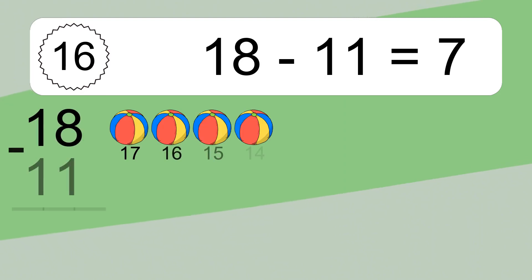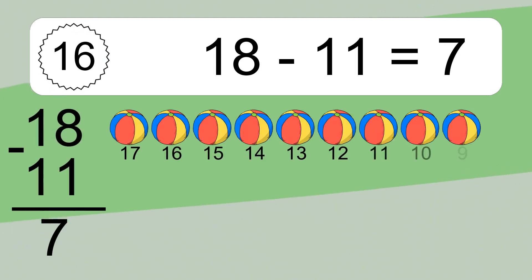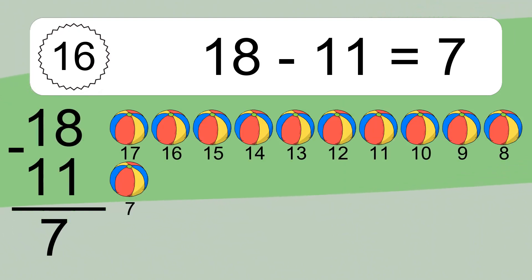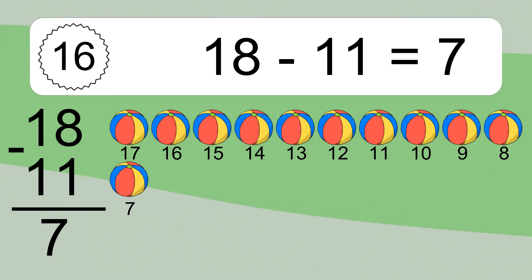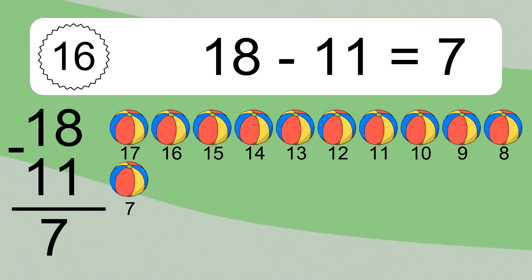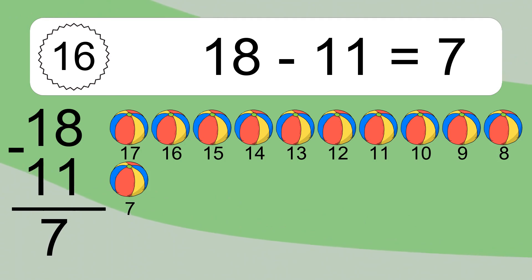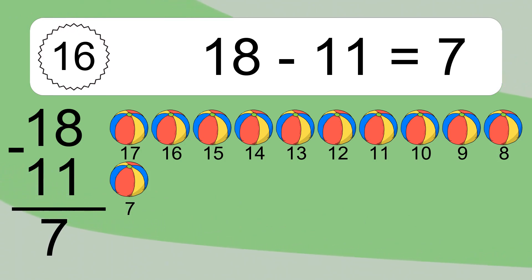18 minus 11 equals what? 18 minus 11 equals 7. Let's count it: 17, 16, 15, 14, 13, 12, 11, 10, 9, 8, 7.